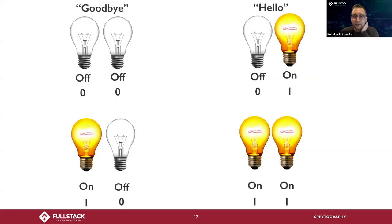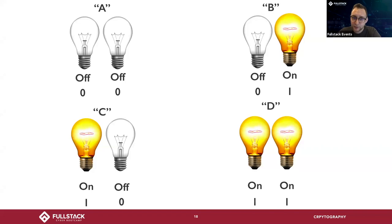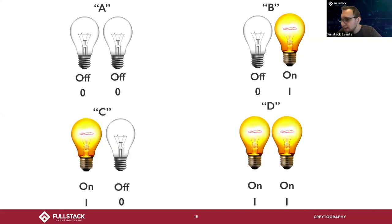With two light bulbs I can say goodbye and hello, how are you, and I'm fine. Obviously this doesn't scale well because there are an infinite number of sentences in English. A better way is to use light bulbs to represent basic characters like A, B, C, D — so zero-zero is A, zero-one is B, and so on. This is very similar to Morse code where shorts and longs represent a language. Every time I add a light bulb, I'm able to double the amount of things I can represent — this is a power of two.